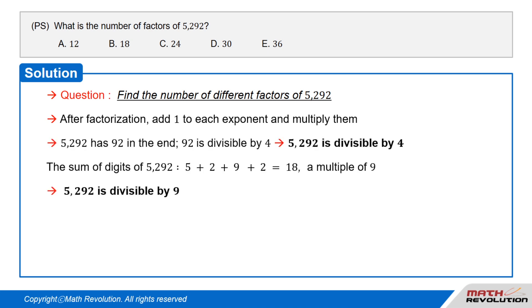Now, 5,292 has 92 in the end, and 92 is divisible by 4. Thus, 5,292 is divisible by 4.